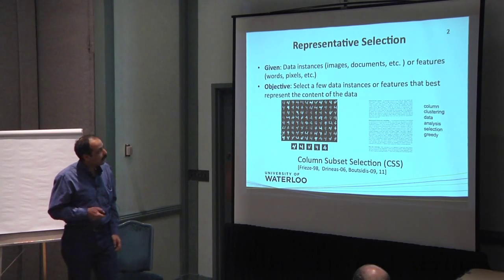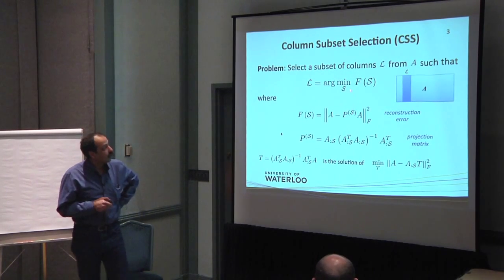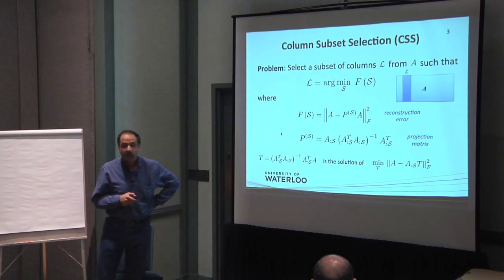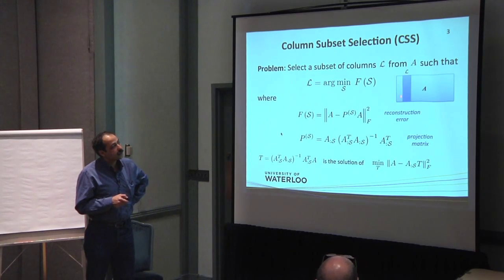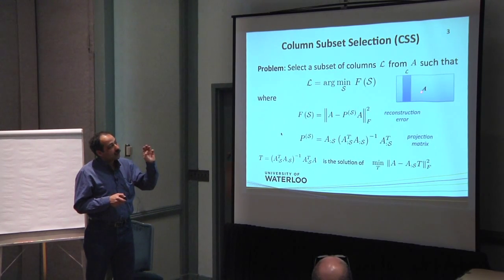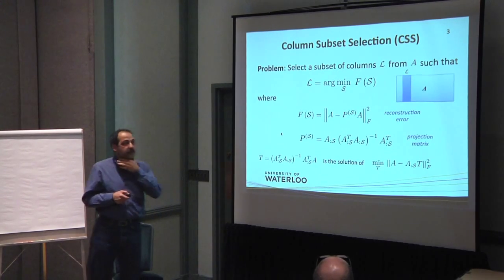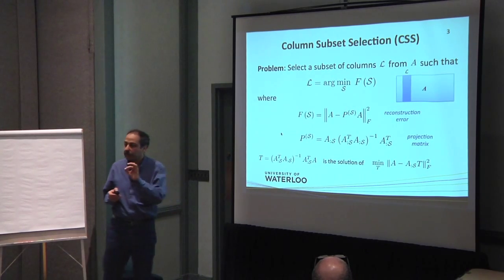So this is basically column subset selection and more formally you can form the problem in this way. You can define an objective function. When your matrix is A, you would like to select a subset of columns of A and you want to project A to this subset of columns. So you want this subset to span the whole matrix the best. So you write this objective function and you want to basically optimize this objective function when P is a projection matrix.